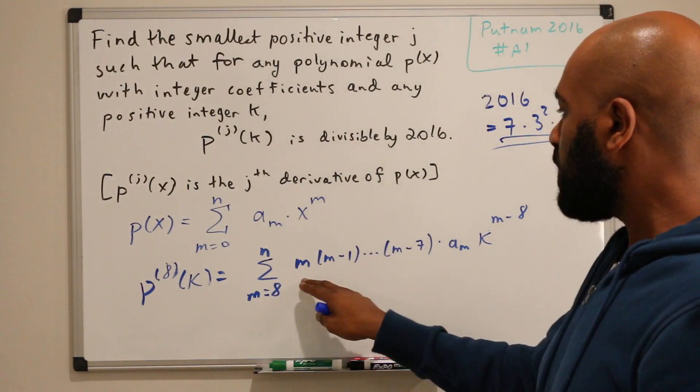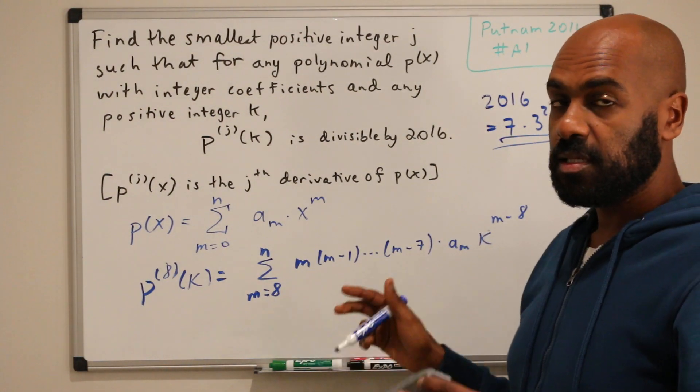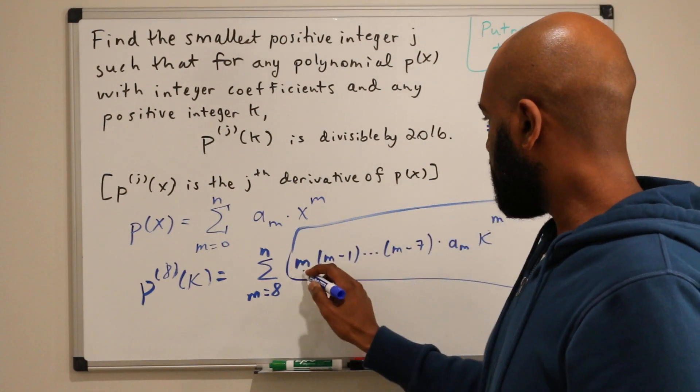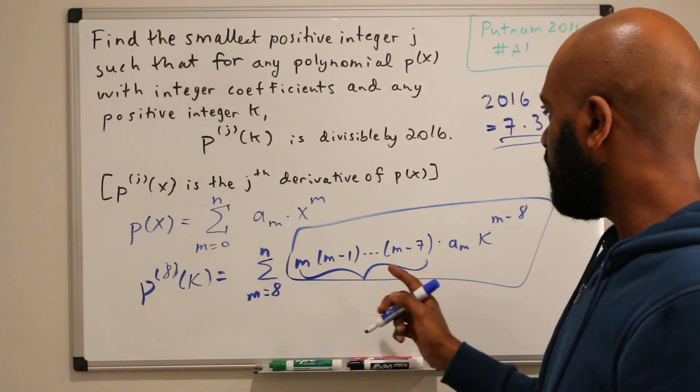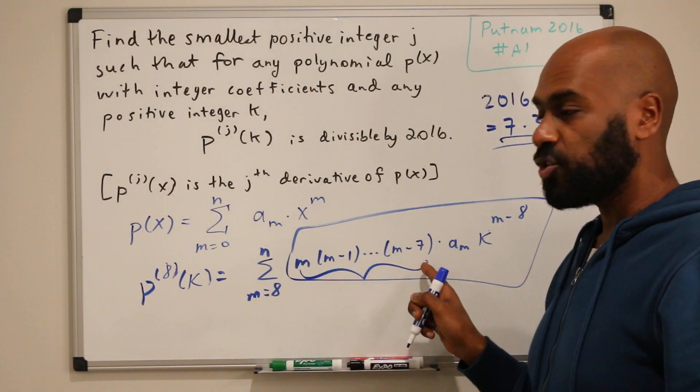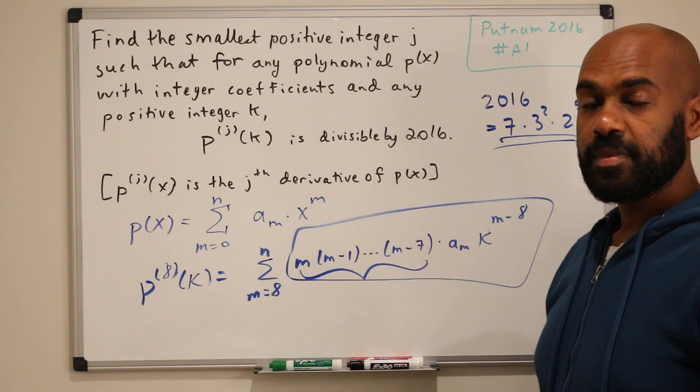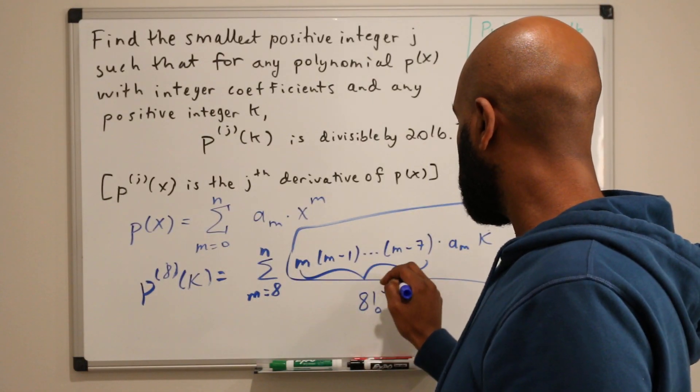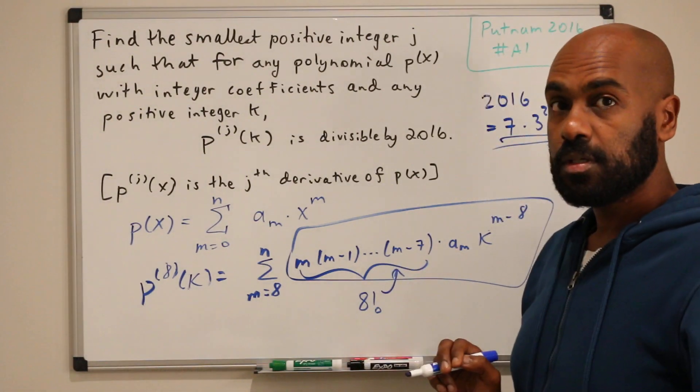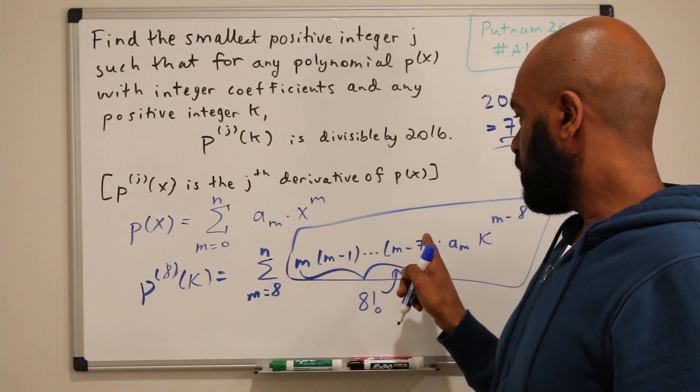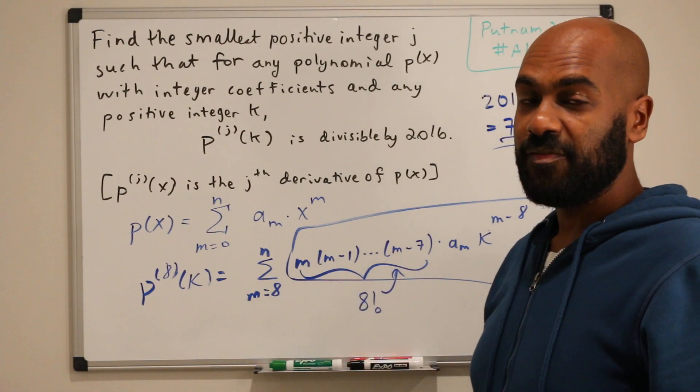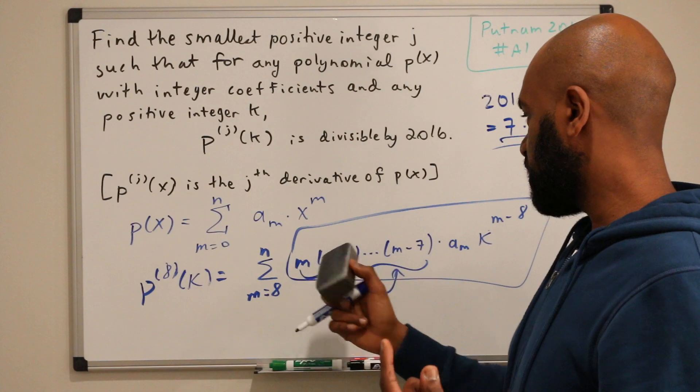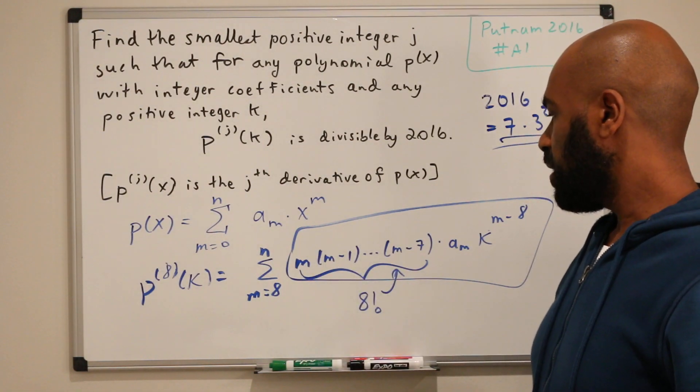Okay, so if each summand is divisible by 2016, then the entire expression is. So let's look at a particular summand. We notice that the summand has the product of 8 consecutive integers written here. So, as a consequence, 8 factorial will actually divide this piece of the expression. Right, because we have this is 8 consecutive integers, so we'll have a multiple of 8, 7, a multiple of 7, because there's a multiple of 7 somewhere in this list, etc.